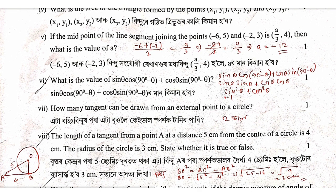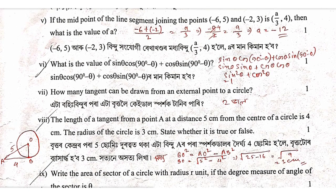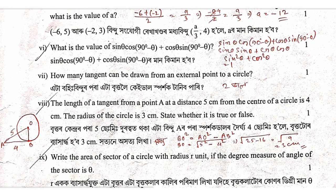The next question: what is the value of sin theta cos 90 minus theta plus cos theta sin 90 minus theta? Since cos 90 minus theta equals sin theta, this becomes sin theta into sin theta plus cos theta into cos theta, which is sin square theta plus cos square theta, which equals 1.